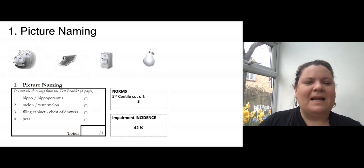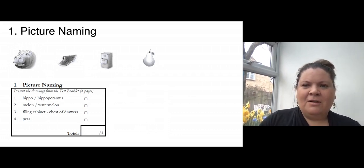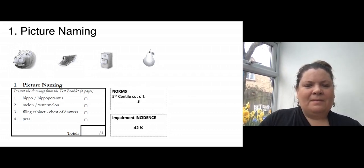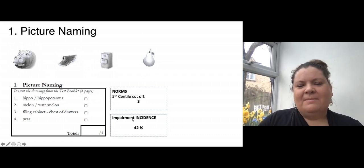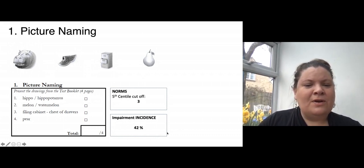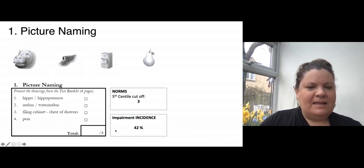The first task is a picture naming task. As you know from the demonstration, there are four pictures and so the score is simply out of four. The typical cut-off is three, so people can make one error and still be okay. This is the impairment incidence from one of our samples in acute stroke — it is very common to have impairments within this task.